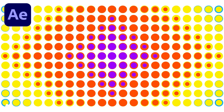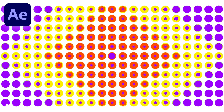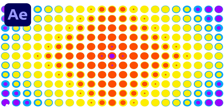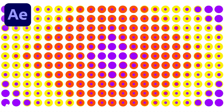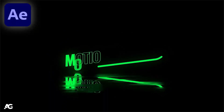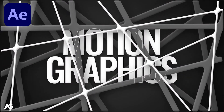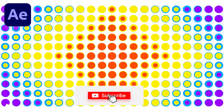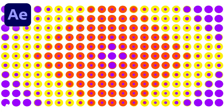Hey guys, welcome back to my channel AG Motion Designs. In today's video we are going to create a creative looping animation inside After Effects without using any third-party plugin, but with the help of simple and cool tips and techniques. If you want to learn more about motion graphics, check out my Udemy courses — links are in the description. If you're new, please subscribe and hit the bell icon. Let's get started.